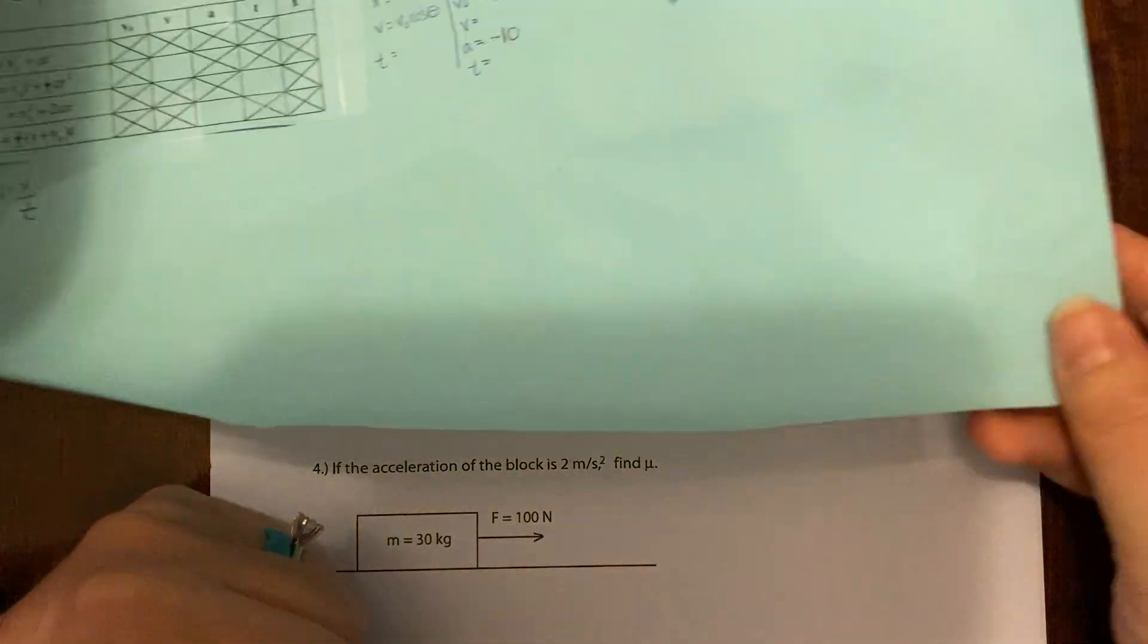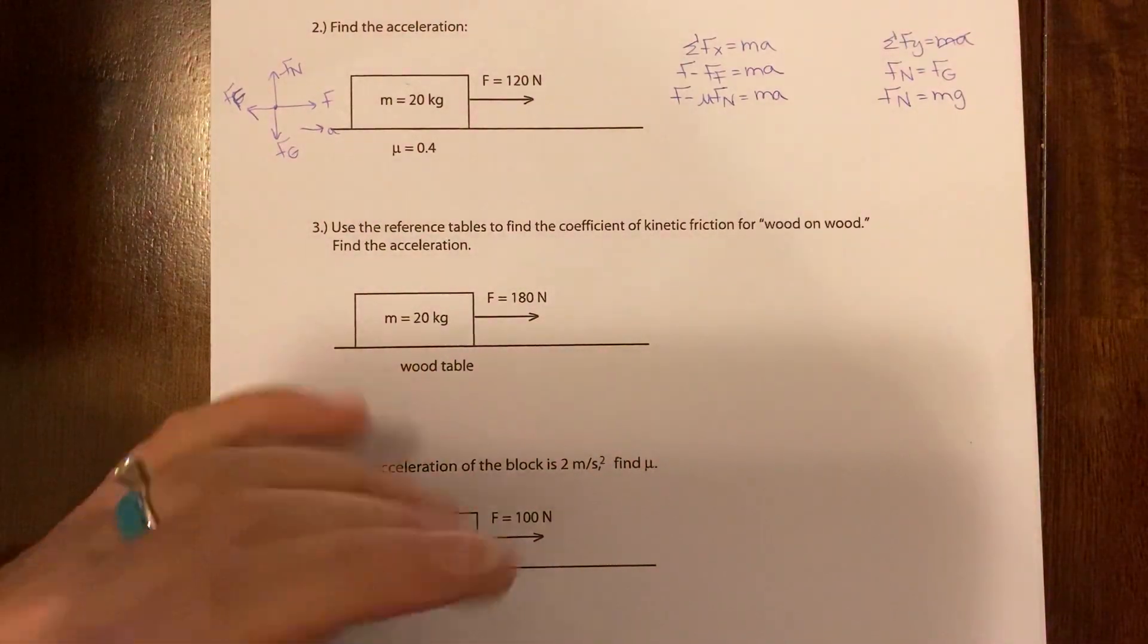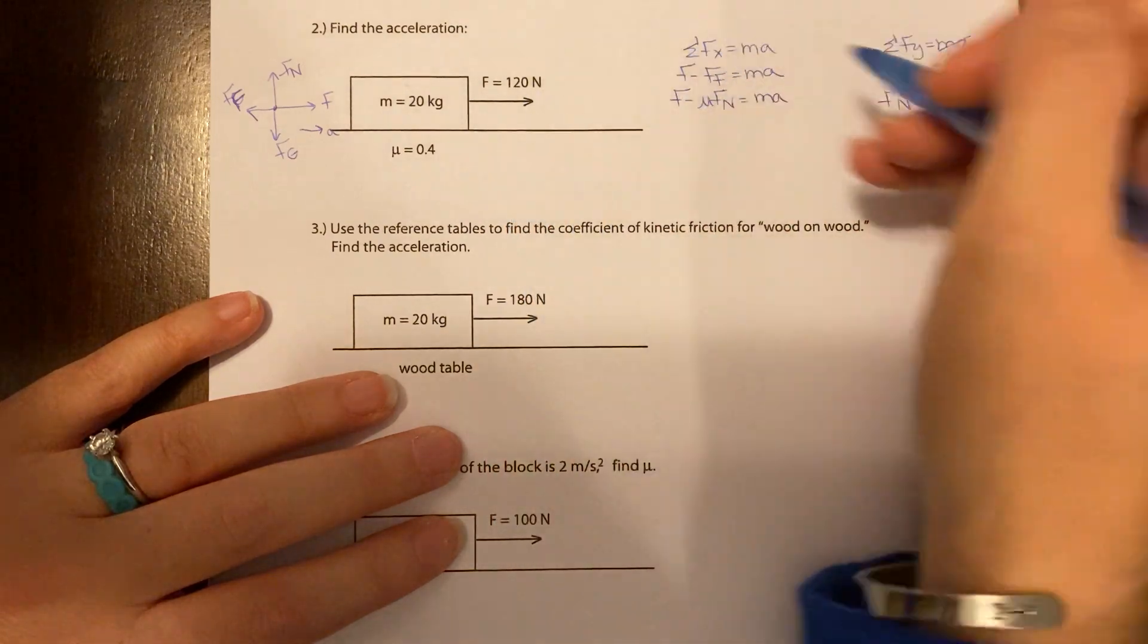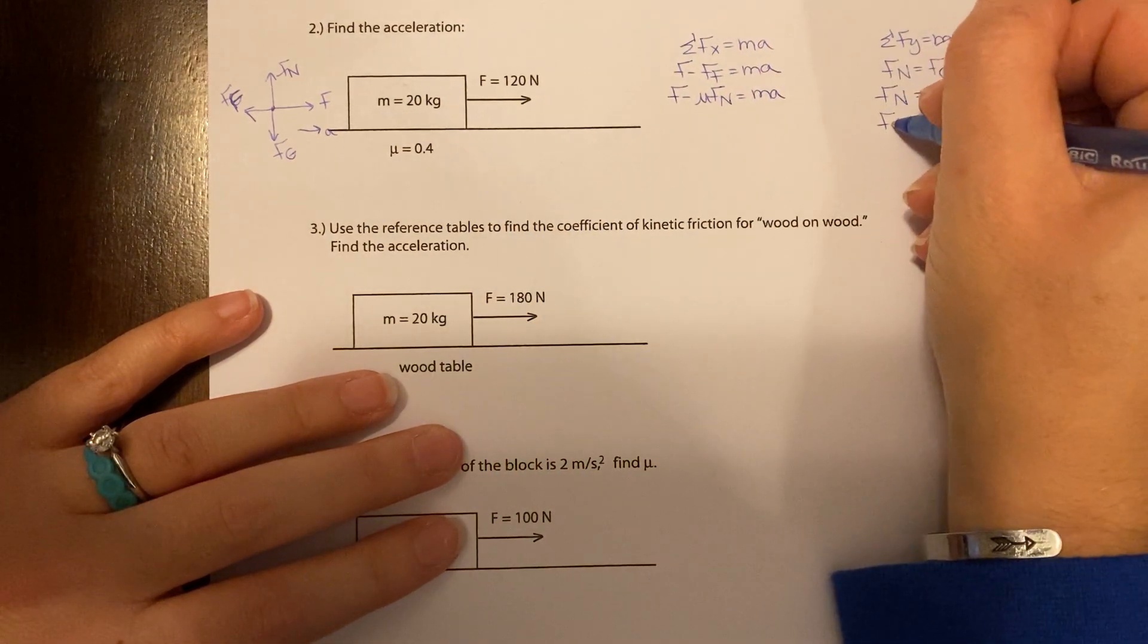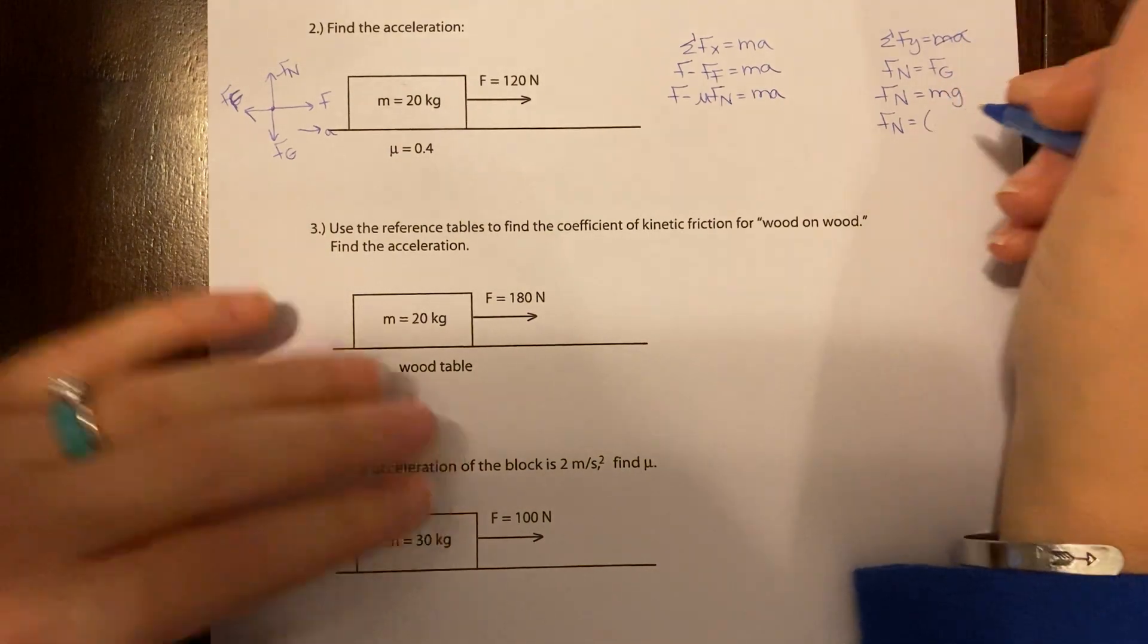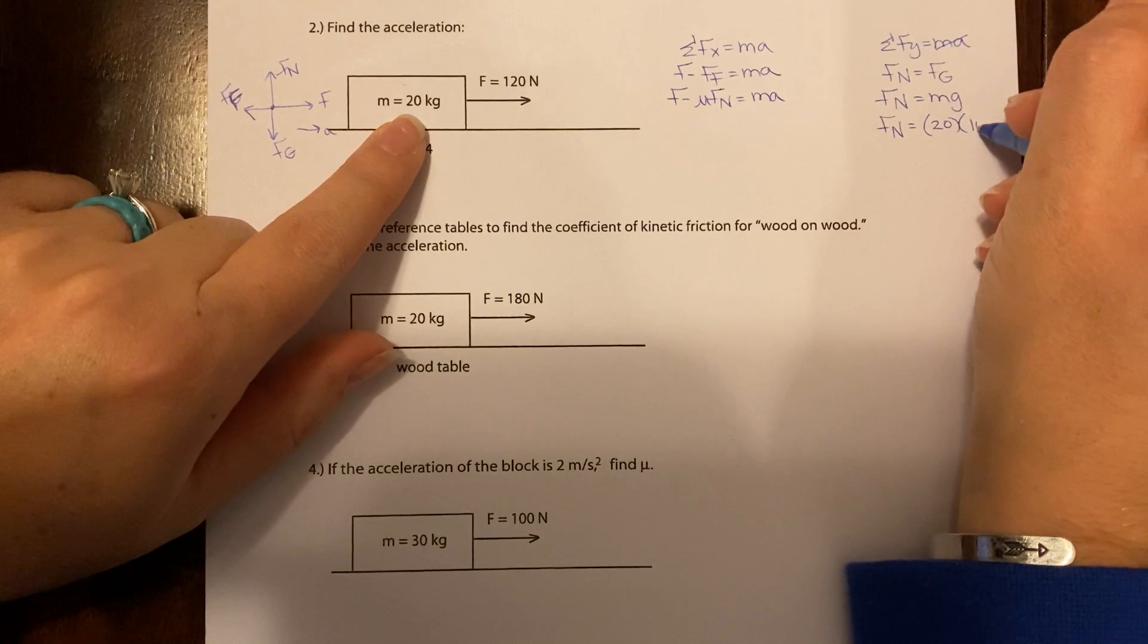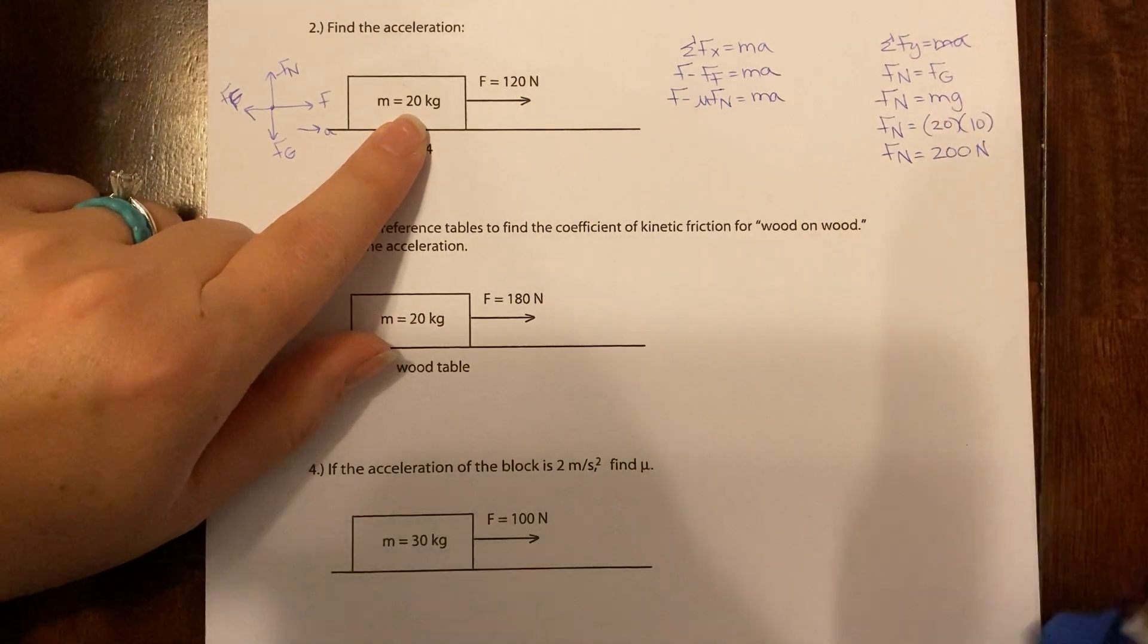Now, it says substitute numbers and solve. So as a reminder, we're looking for the acceleration. So let's substitute the numbers that we have. Okay, well, hold on. I see fn over here. I'm going to start over here. Well, if fn equals mg and the mass is 20 and g is 10, let's do this difficult math and say that fn is 200.